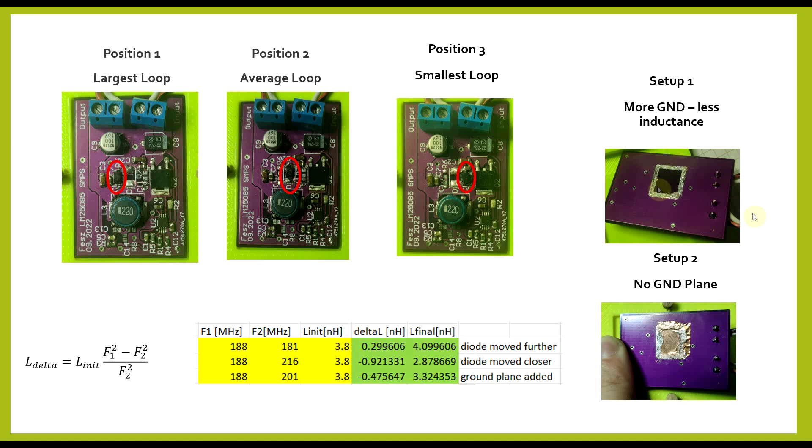we decreased by about 0.9 nanohenries to a final value of 2.87, and well, when we played around with the ground plane, by adding in the copper filler, we decrease the inductance by about 0.47 nanohenry to a final value of 3.3 nanohenries.